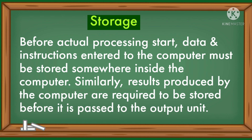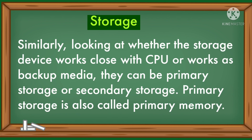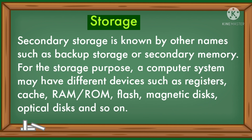Similarly, results produced by the computer are required to be stored before they are passed to the output unit. Looking at whether the storage device works closely with the CPU or works as backup media, storage can be primary storage or secondary storage. Primary storage is also called primary memory. Secondary storage is known by other names such as backup storage or secondary memory. A computer system may have different storage devices such as registers, cache, RAM, ROM, flash, magnetic disks, optical disks, and so on.